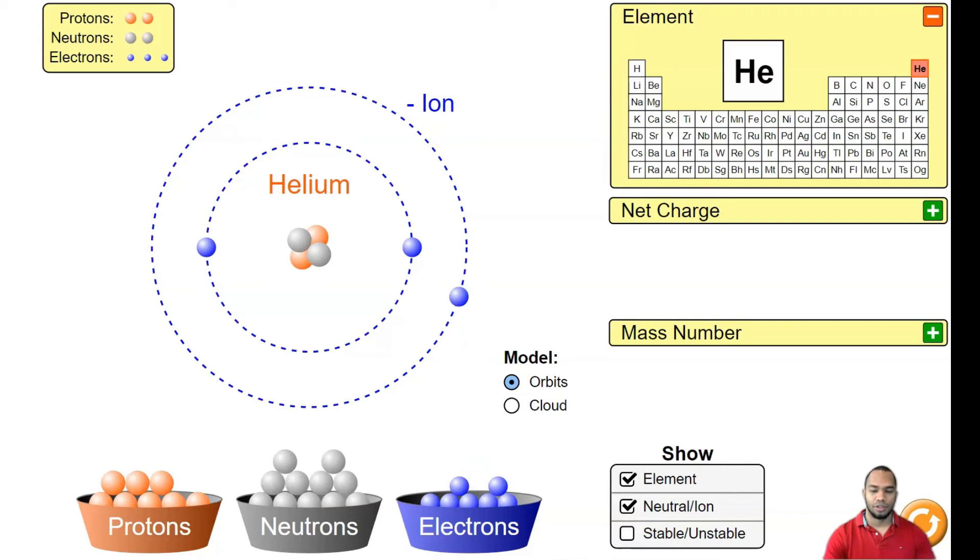it only goes to this shell. So that means helium is complete with only two. This is what I was talking about earlier. Let's try another example - this will be our last example. Let's build beryllium. Take a look, how many valence electrons does beryllium have?